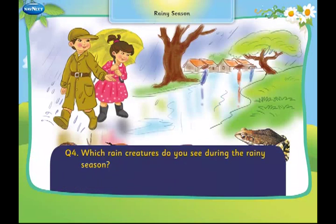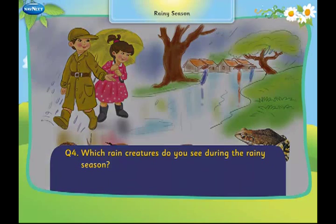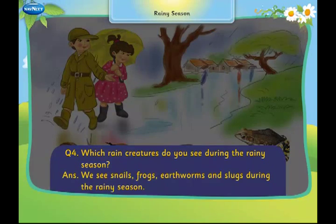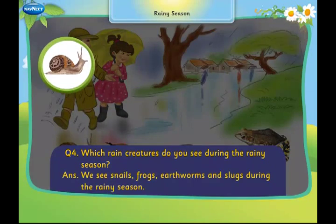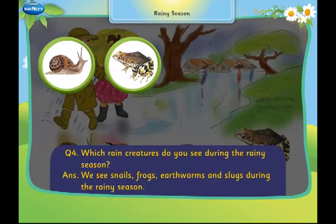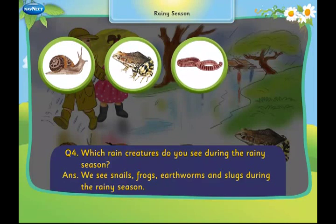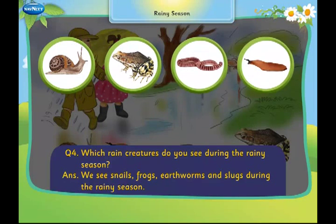Which rain creatures do you see during the rainy season? We see snails, frogs, earthworms, and slugs during the rainy season.